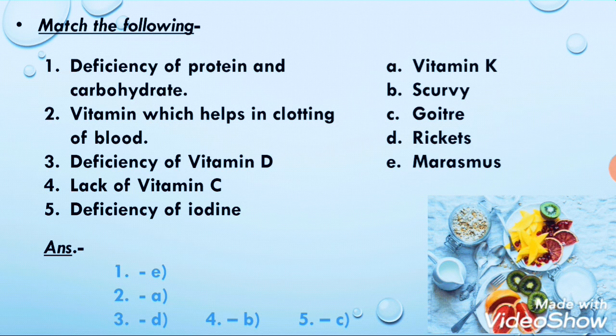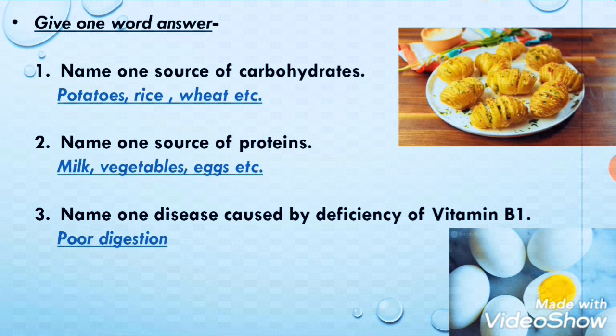Last one: deficiency of iodine. As I just told you in the true/false section, when iodine mineral is low in our diet or body for a long period, our neck swells up. The gland inside the neck swells, and that disease is called goiter. Goiter is the correct matching.